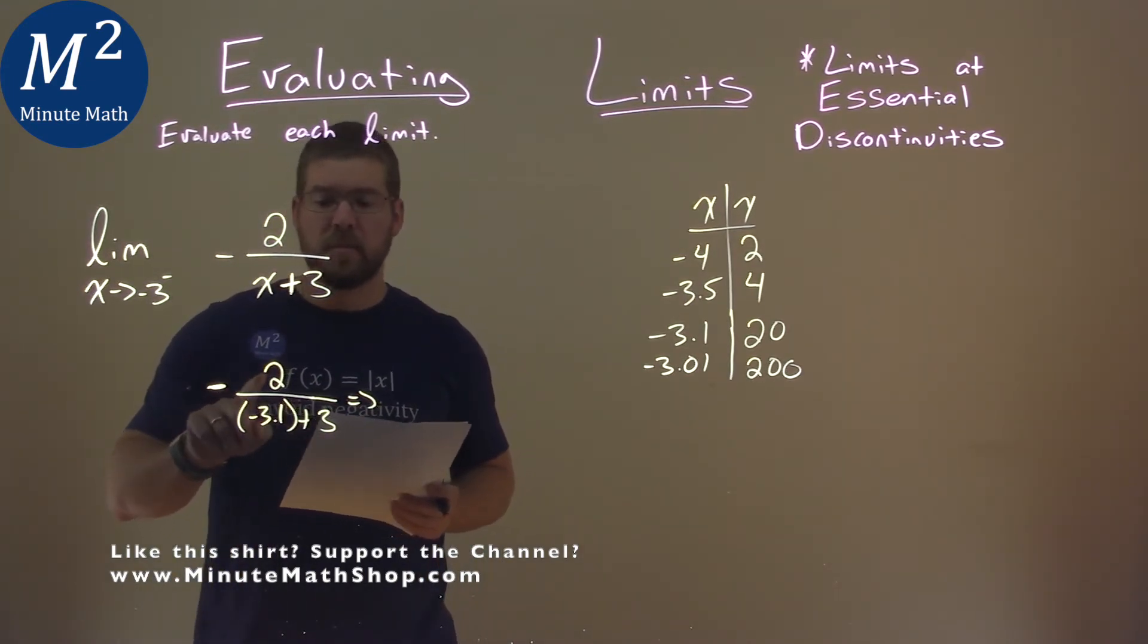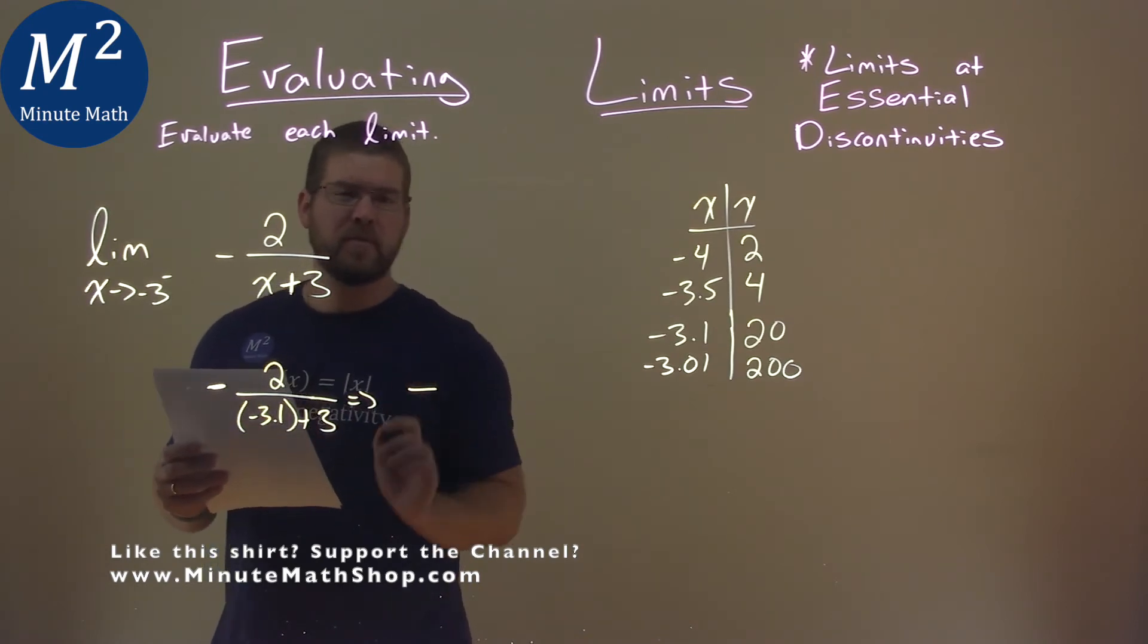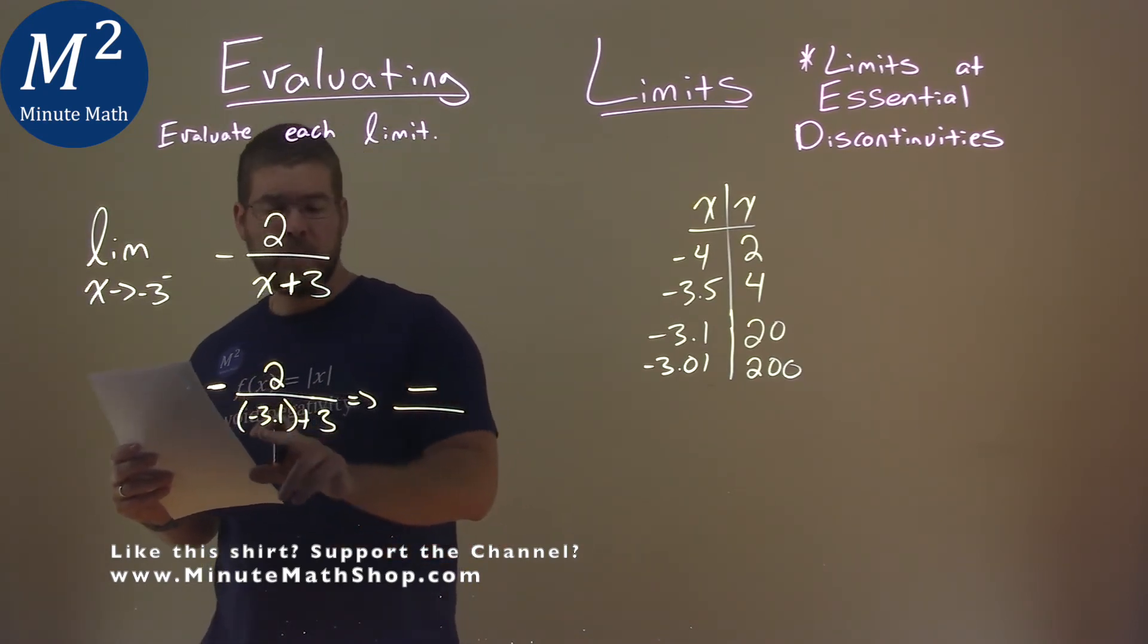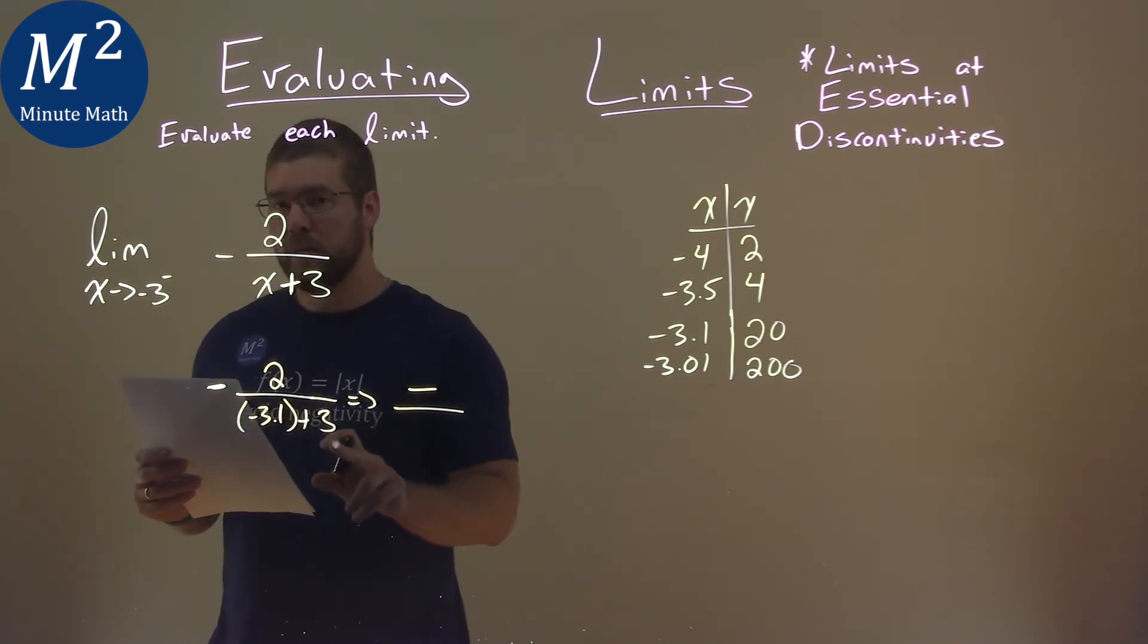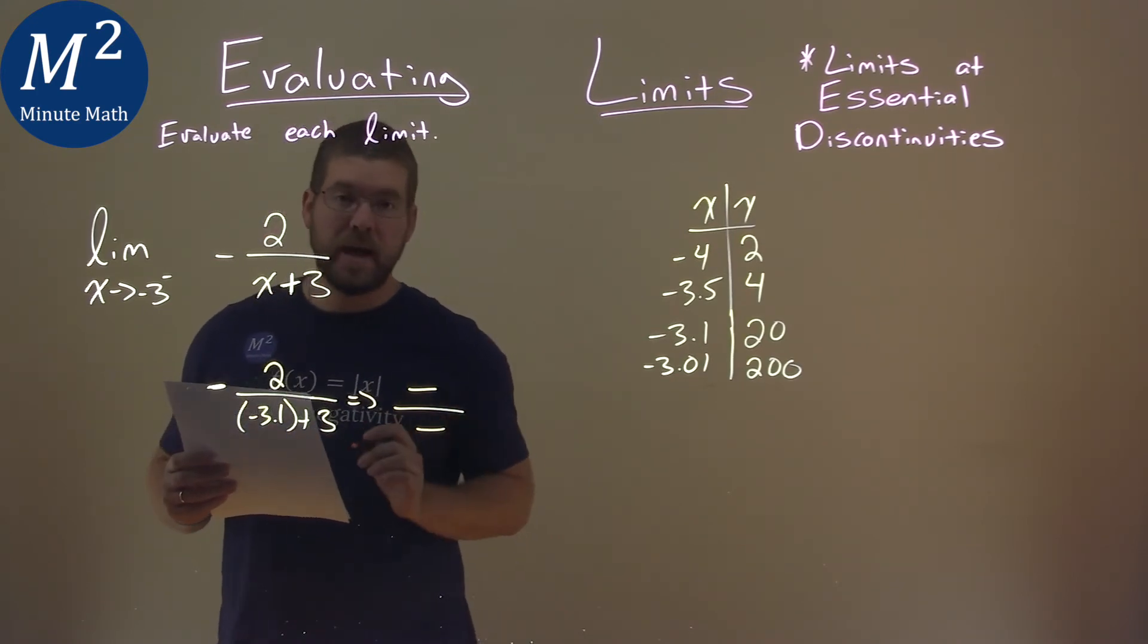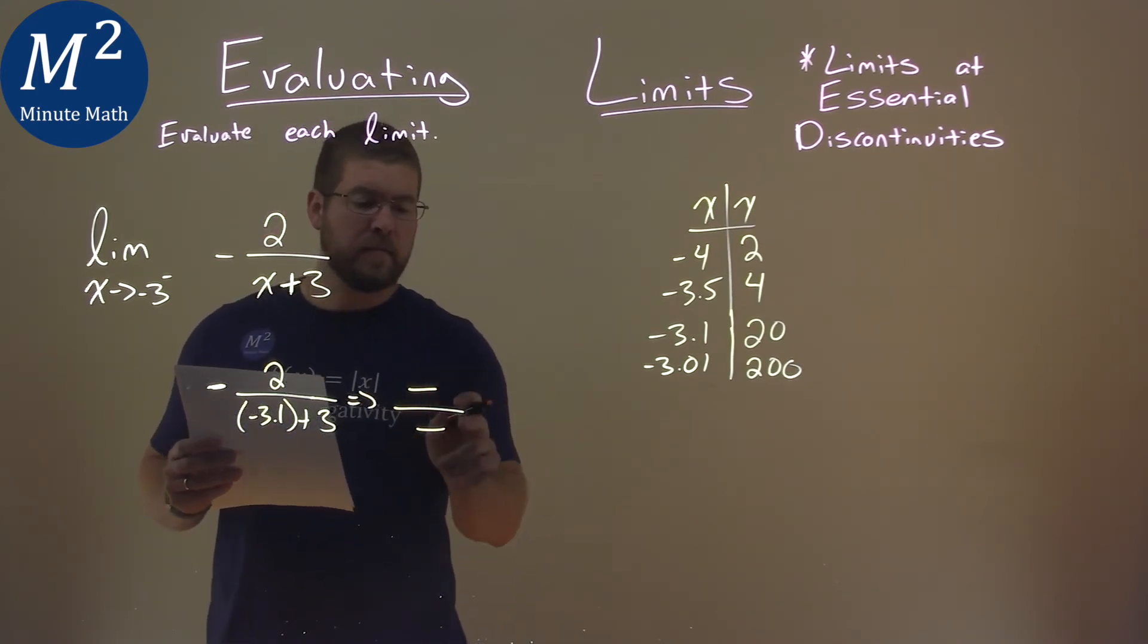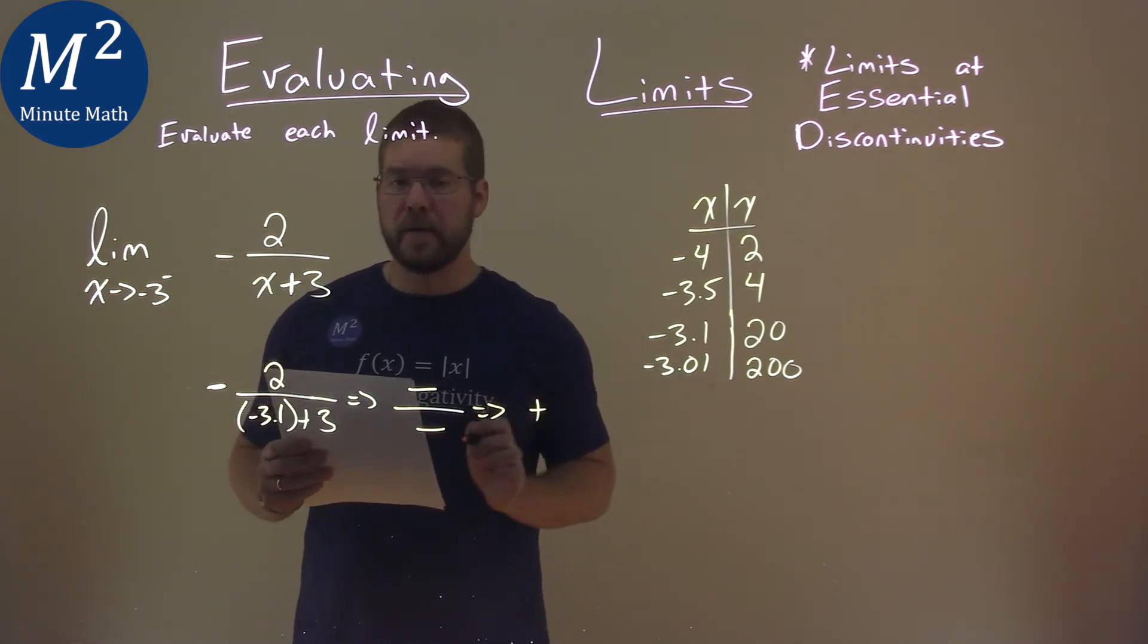We have a negative times a positive number, so our numerator turns out to be a negative. Our denominator, negative 3.1 plus a positive 3, is still a negative. A negative divided by a negative comes out to be a positive.